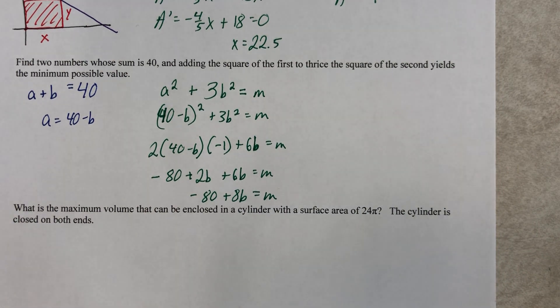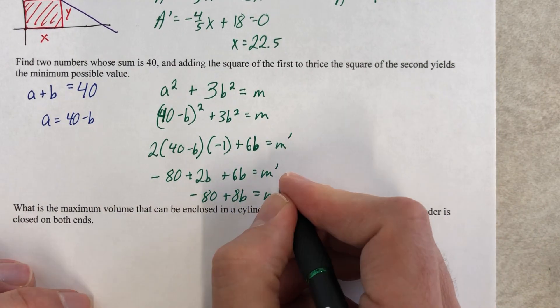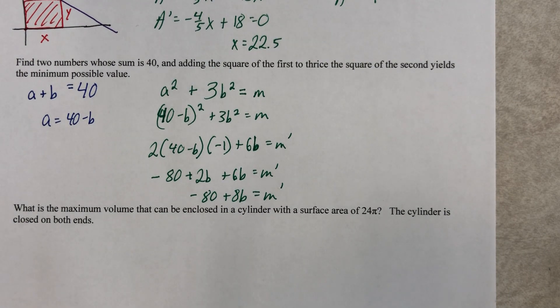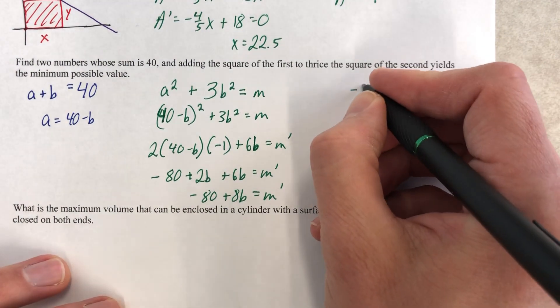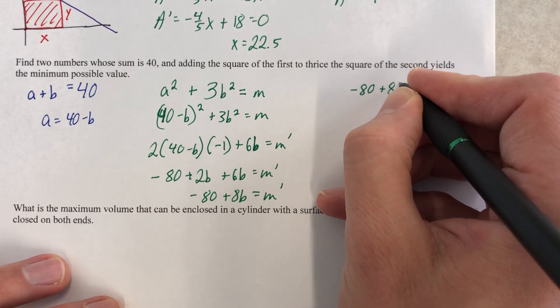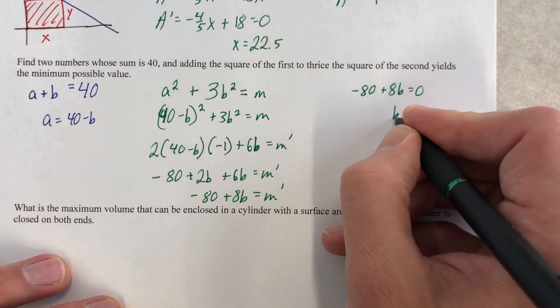So we, oh, we took the derivative. Ah, no! M prime, M prime, M prime. There we go. Sorry, sorry. Yeah, from here to here, we took a derivative, so we have to make sure that's in there. And we're ready to set the derivative equal to 0. So negative 80 plus 8B equals 0. B is 10.